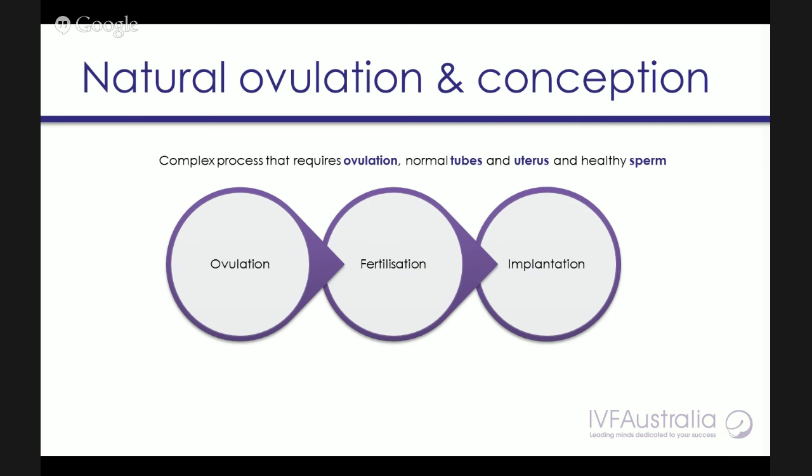Ovulation is important to make sure that egg is released, but the egg then needs to travel down healthy fallopian tubes in order to become fertilised by sperm coming in the other direction. Once fertilisation has happened, the next important process is implantation. Those hormones are also integral to making sure that you form a nice wealthy lining inside the uterus, so that when the embryo travels into the uterus, it's got somewhere nice and soft to land and has the ability to implant.